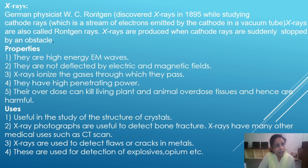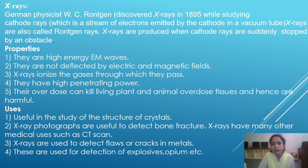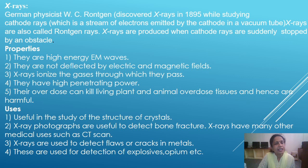Next, X-rays, which are also very important. German physicist W.C. Röntgen discovered X-rays in 1895 while studying cathode rays, which are a stream of electrons emitted by the cathode in a vacuum tube. X-rays are also called Röntgen rays. X-rays are produced when cathode rays are suddenly stopped by an obstacle.